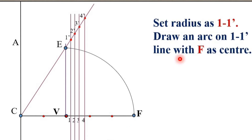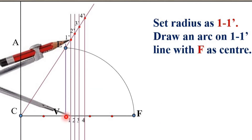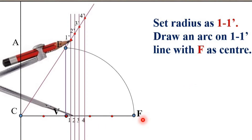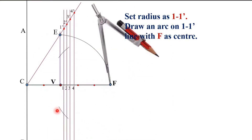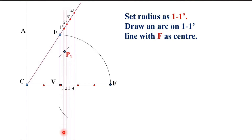Now the very important next step: set the compass radius equal to the distance 1 to 1 dash. Draw an arc on the 1–1 dash line with F as the center. Mark the intersection point as P1 — both above and below the axis. The radius is exactly 1 to 1 dash, so you get point P1 on both sides.